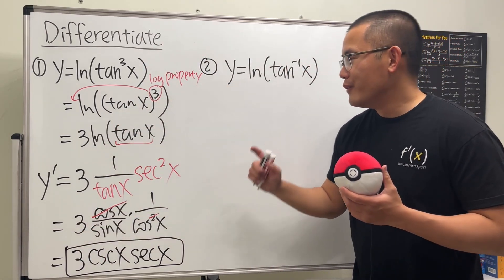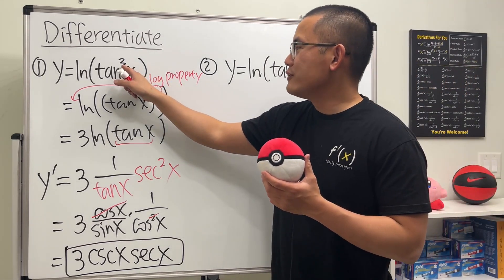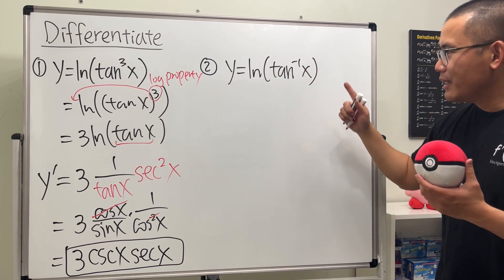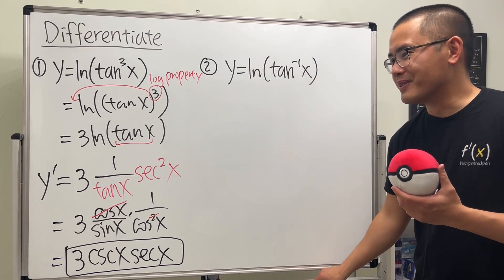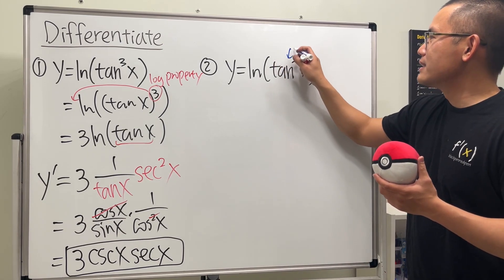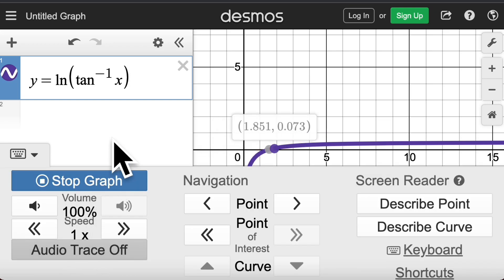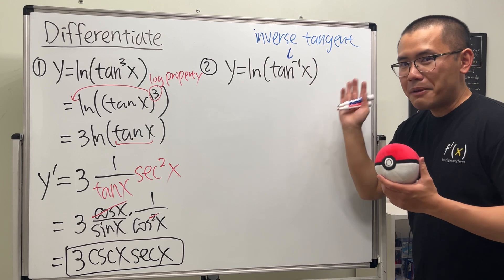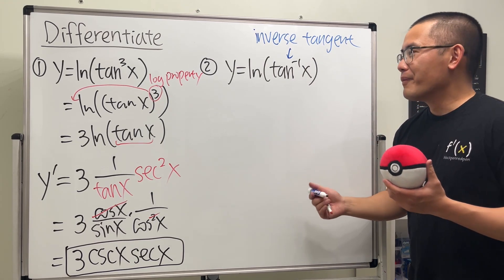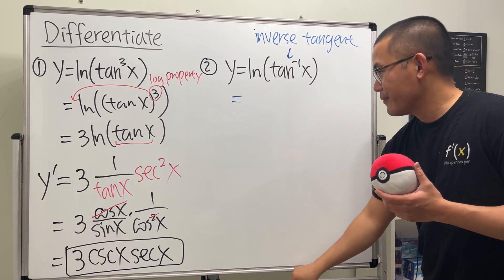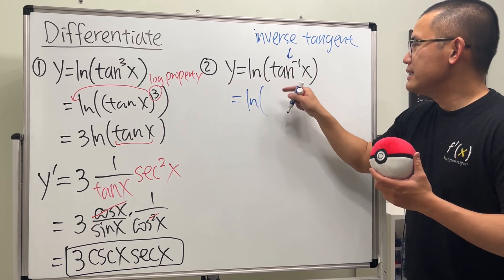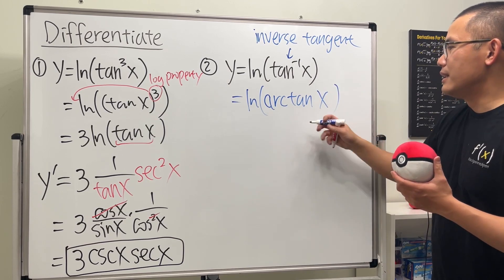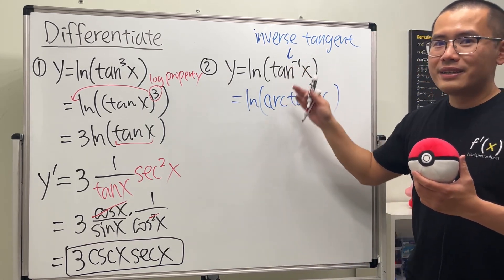For the second one, we had the power of 3 out front easily, but here we have negative one. Can we bring the negative one to the front? No — this is the problem, because the negative one notation here means the inverse tangent of x, not a power. Another notation people use is arctan(x), so ln of arctan(x).